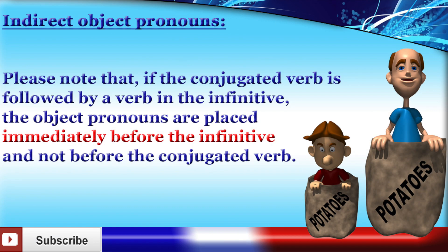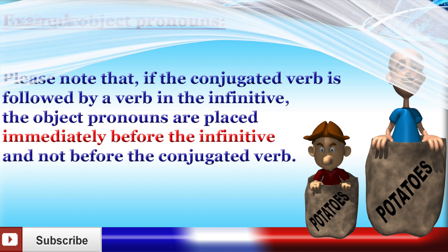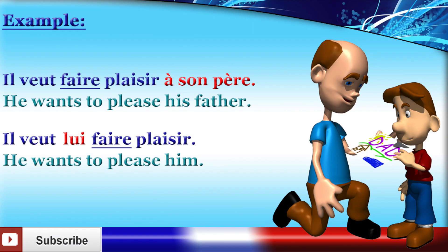Please note that if the conjugated verb is followed by a verb in the infinitive, the object pronouns are placed immediately before the infinitive and not before the conjugated verb. For example, il veut faire plaisir à son père — he wants to please his father. Veut is the conjugated verb and faire is the infinitive. So if we wanted to replace the indirect object à son père with an indirect object pronoun, we would get: Il veut lui faire plaisir — he wants to please him. Notice that the indirect object pronoun lui is placed after the conjugated verb and before the infinitive.